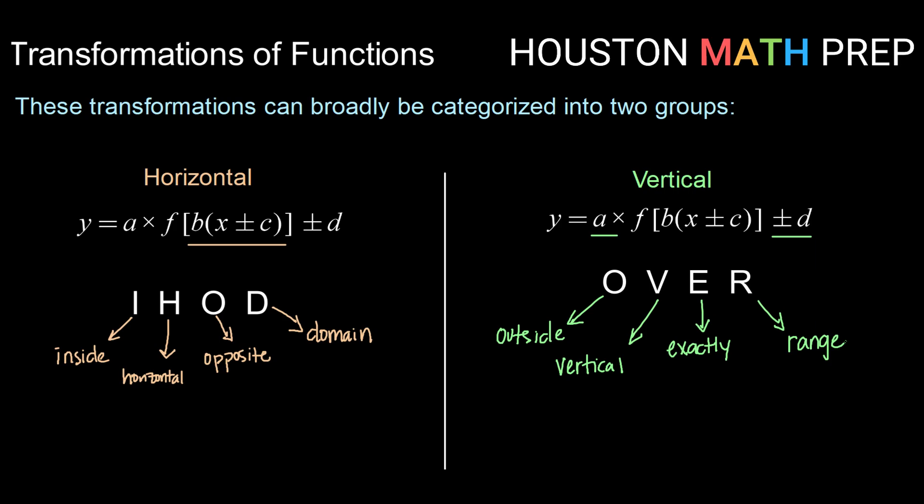So anything like a multiplier on the outside, or a plus or minus value on the outside, is going to affect our graph vertically. It's going to do exactly like it looks. So if we multiply by three, things are going to get three times as large. If we multiply by one-half, things are going to get half as large. If we have plus three on the outside, that's going to move our graph up three. And those are going to affect our range.